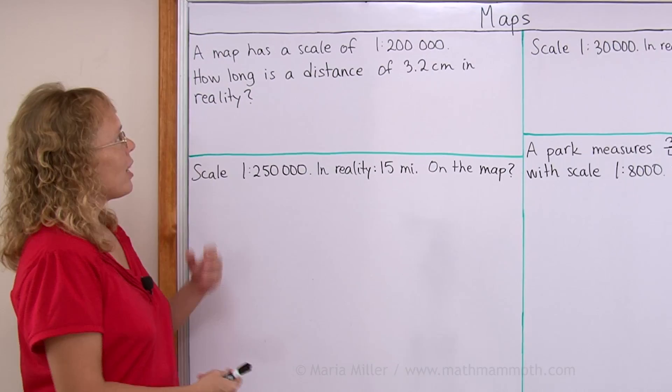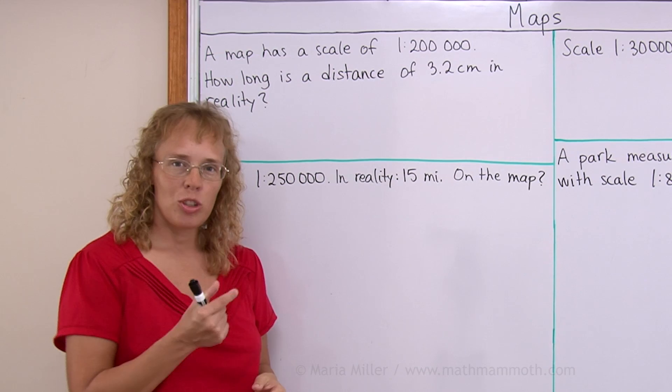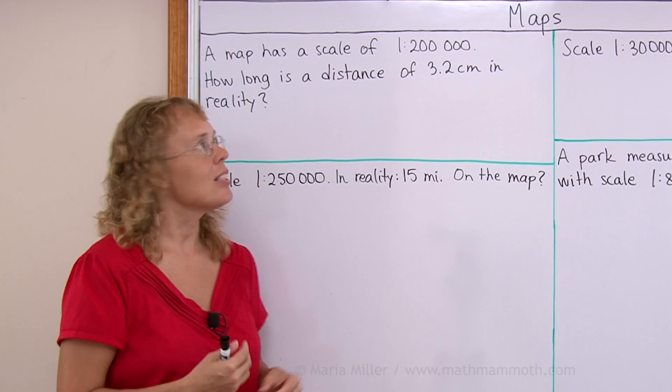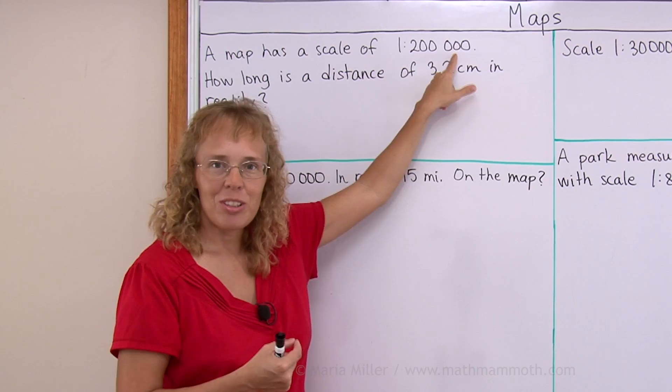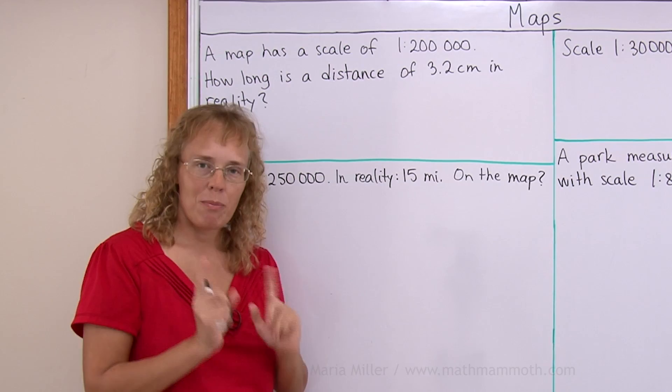For example, if I have a map that has a scale of 1 to 200,000, that means that one unit on the map corresponds to 200,000 such units in reality. So you could measure on your map in inches or in centimeters, either way those units will be then 200,000 times that many units in reality.